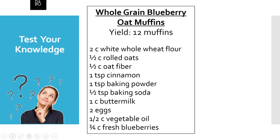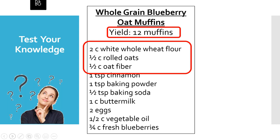Let's say we found a recipe online for whole grain blueberry muffins. Does this recipe contain all the information we need to determine serving sizes in ounce equivalents? Yes, it does — it lists the amounts of grains in the recipe as well as the number of servings, which is 12 muffins. Are all of the grains in this recipe creditable? No — oat fiber is not a creditable grain ingredient, so we would not use that amount in our calculations. We would only use the creditable grains, which are the white whole wheat flour and the rolled oats.